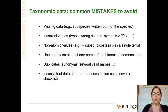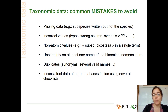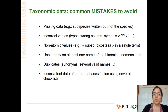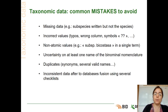You can also encounter some non-atomic values. For example, subspecies Bicostasa in a single term. In Darwin Core, the standard used with GBIF, there's a field for the subspecies rank and another field for the subspecies value. You must be careful not to merge these two fields in a single term.